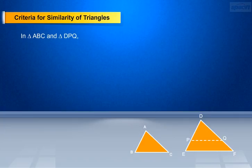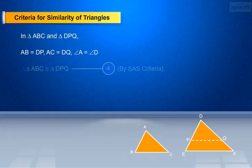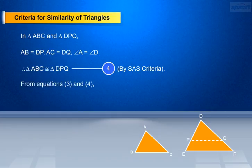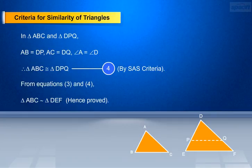Similarly, in triangle ABC and triangle DPQ: AB equals DP, AC equals DQ, and angle A equals angle D. By SAS criteria, we can say that triangle ABC is similar to triangle DPQ — make it equation 4. From equations 3 and 4, we can conclude that triangle ABC is similar to triangle DEF. Hence proved.